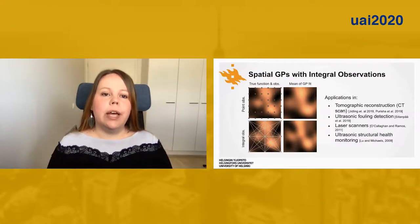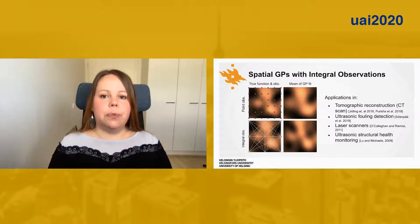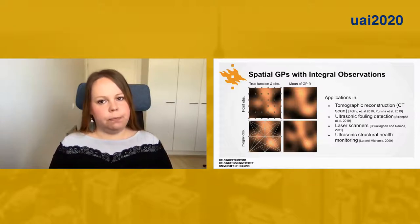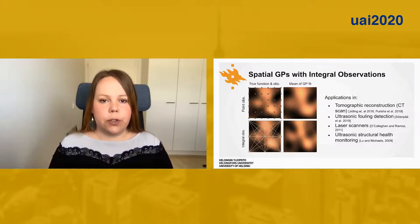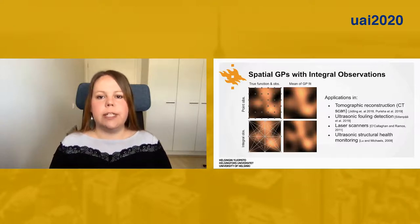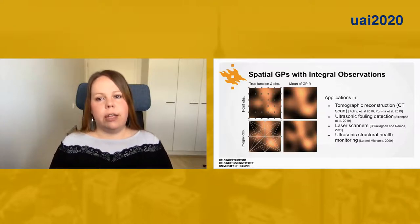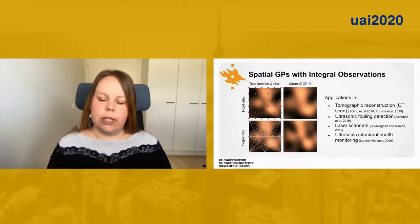Traditionally in Gaussian process regression we observe values of the function at specific points, and based on these observations we can form an estimate of the function. In the top two pictures on the left we have observations from 36 different points, and on the right we have formed an estimate of the function based on these observations.